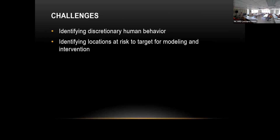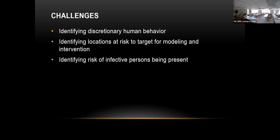Another limitation is identifying locations at risk to target for modeling. An airport is very big and it's hard to model the whole airport. We want to target specific locations. And if we look at the whole city — where should we be looking? What are the risks of some infected person being present?